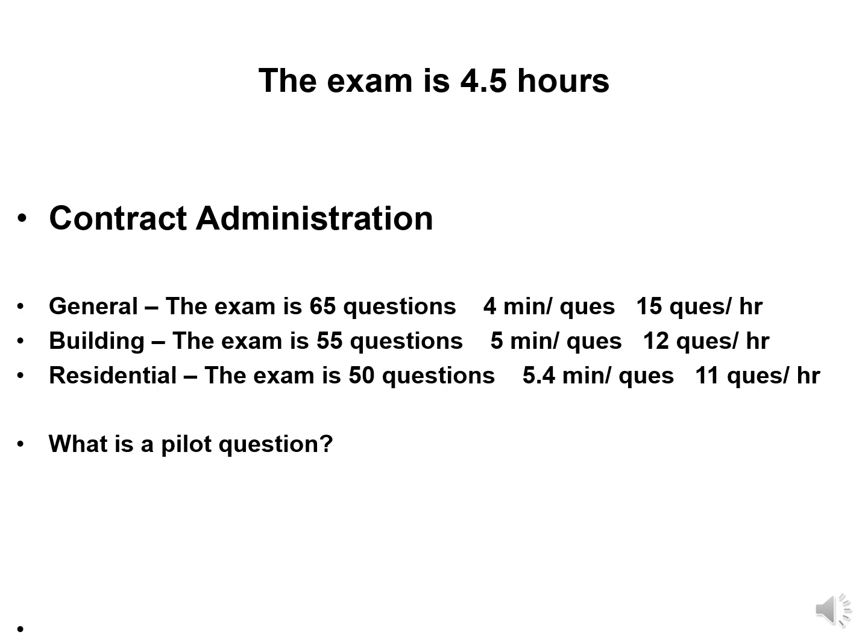Let's talk about the exam itself. It's four and a half hours — you probably know that already since you've taken it before. I break it down as: general 65 questions, building 55, residential 50 — about four minutes per question on the general, so you need to be at 15 questions an hour. I include the pilot questions because you have to assume they're real. The state will tell you there are only 60 questions in the general, 50 in building, and 45 in residential — but that excludes the pilot questions they're testing out.